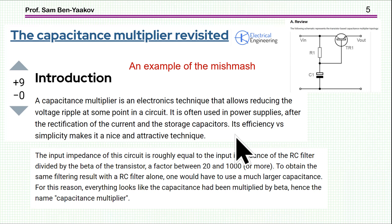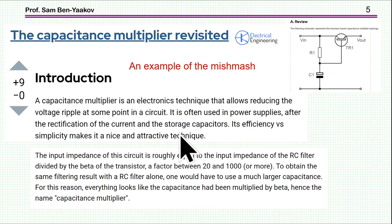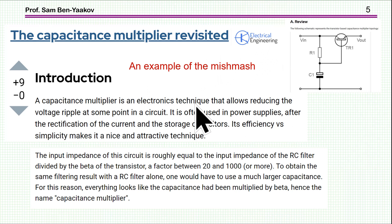One objective of this video is to clarify what I think is a confusion regarding this filter and what is called the capacitance multiplier. In many places this filter is referred to as a capacitance multiplier. I think this is a wrong name for this circuit — although it has some features of capacitance amplification, that has nothing to do with the filter action. For example, one website describes this as an 'electronic technique that allows reducing the voltage ripple' and calls it a capacitance multiplier.